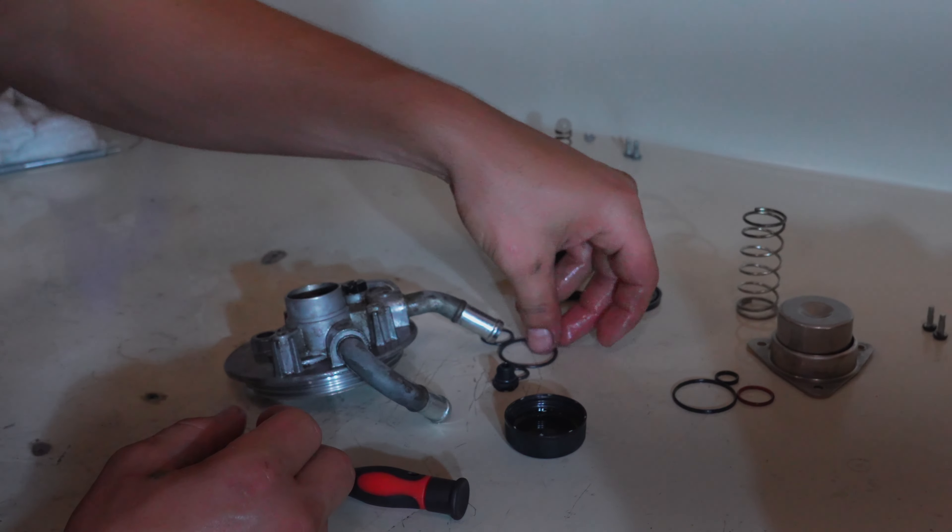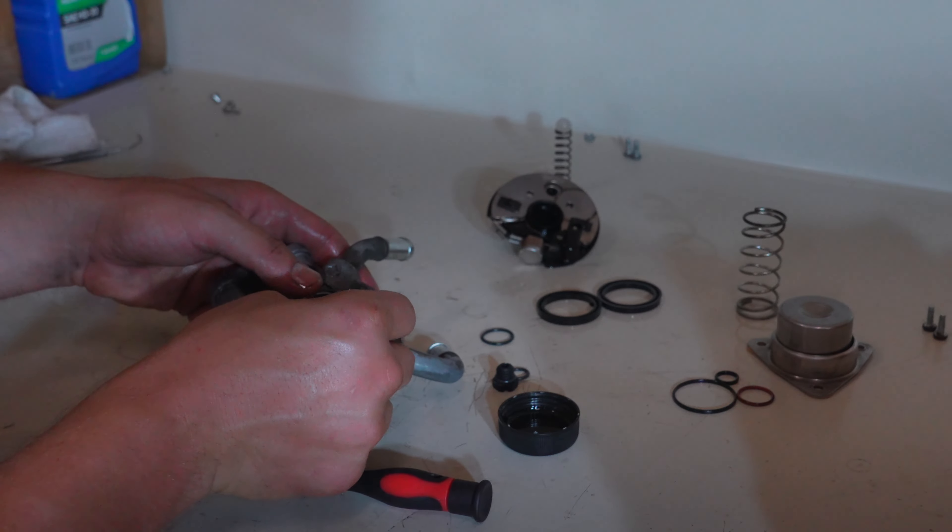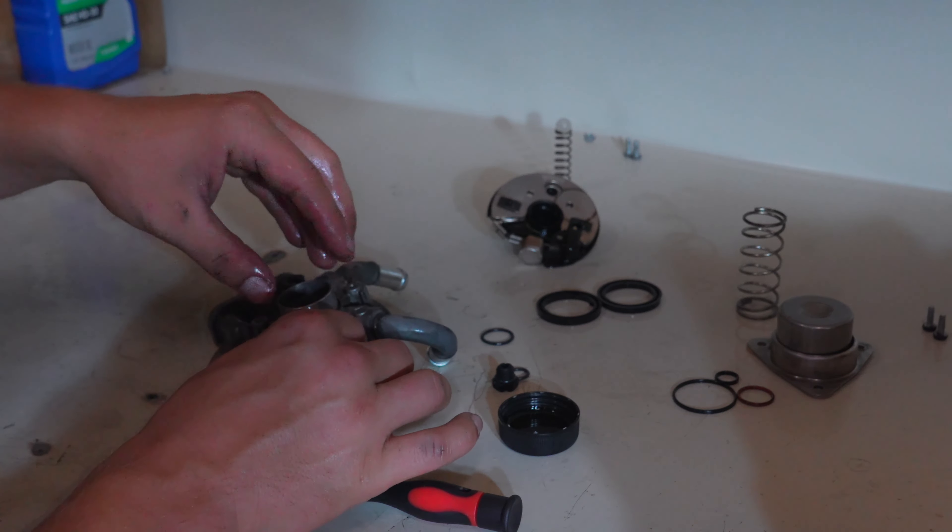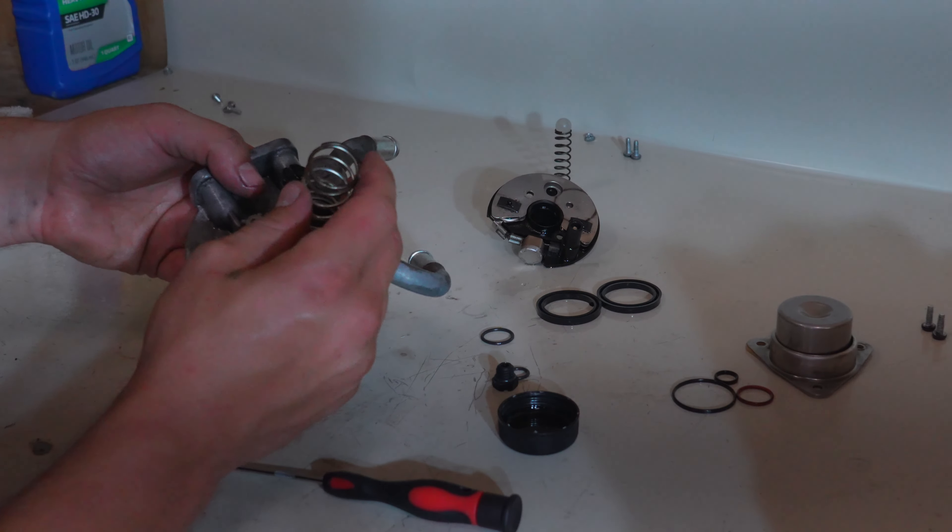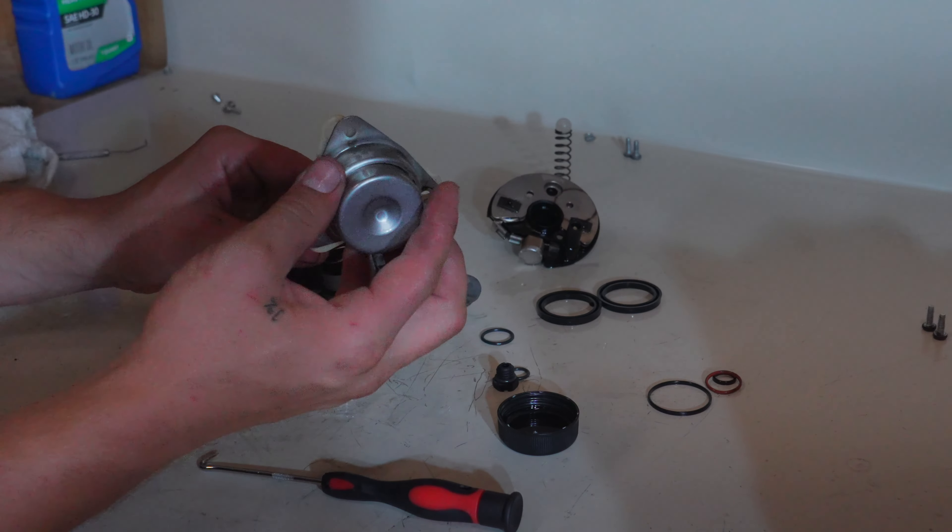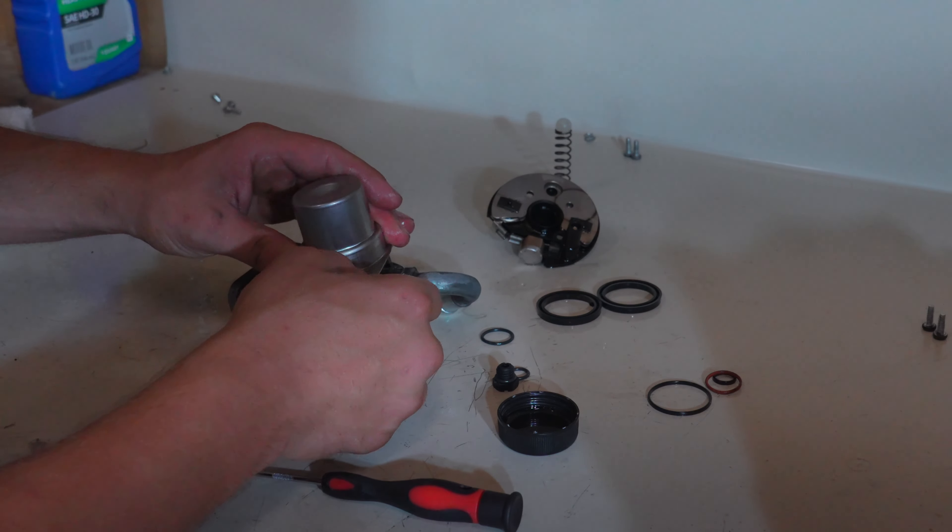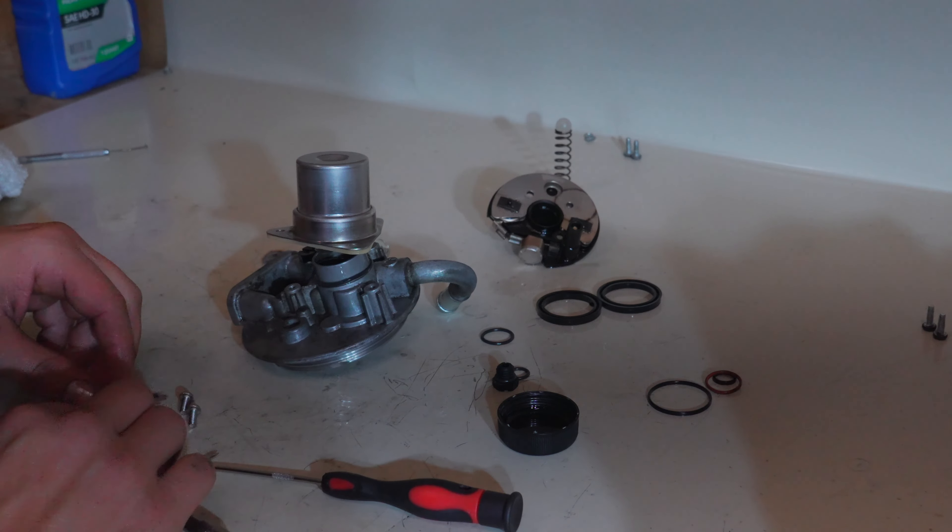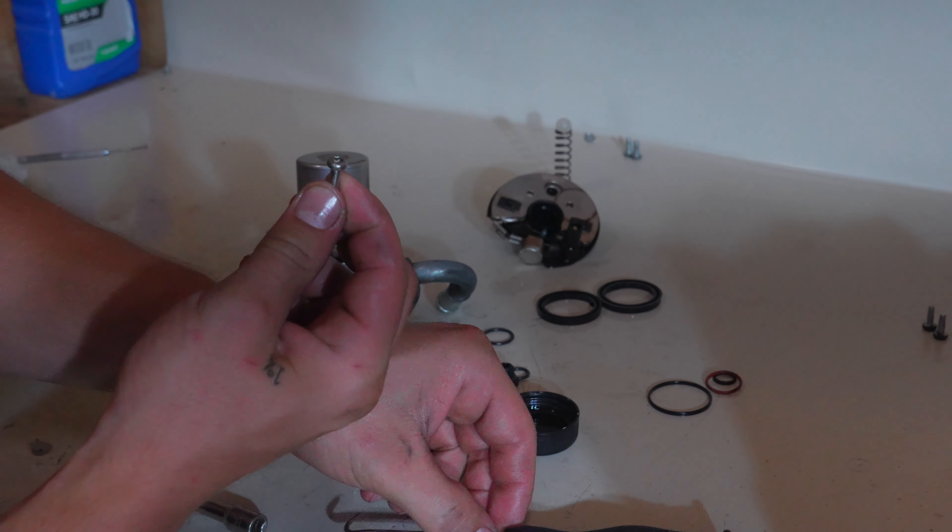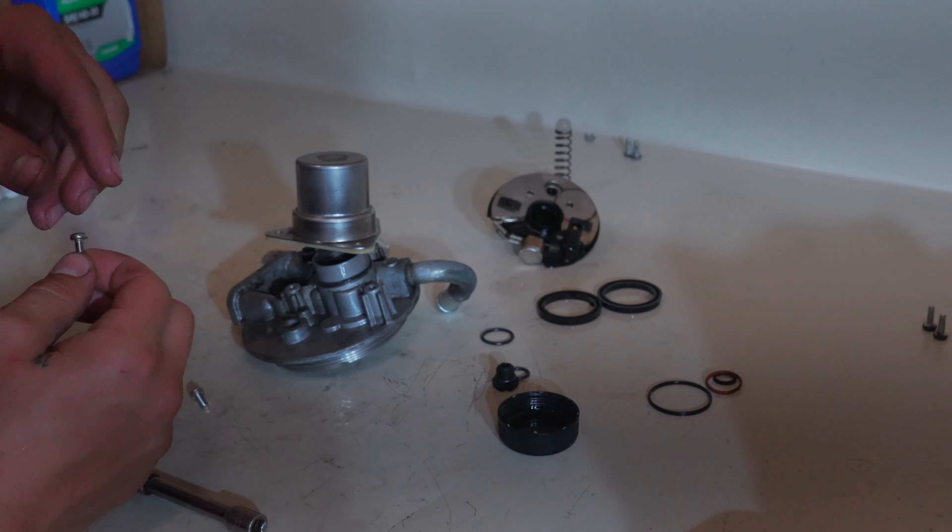All right, next we will grab our large O-ring, lube it up and set it on top here. Push it all the way down into place. Now we'll take this large spring, set it in here, and we'll set this entire assembly on top of it. There we go. Now we will use our three new screws that came in the kit to attach the primer pump back to the housing.